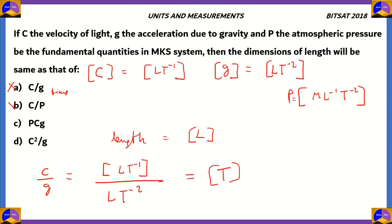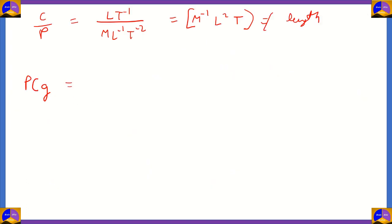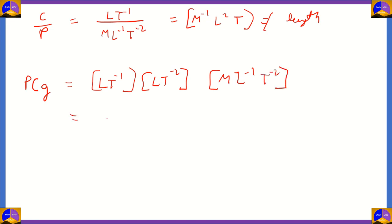Let's look at option C — p, c, and g — so that means multiplying all three quantities together. What you get is L·t⁻¹ times L·t⁻² times M·L⁻¹·t⁻². We get M, and then one L cancels with L⁻¹, and then combining the time exponents: minus 1, minus 2, minus 2 gives minus 5. So the result is not equal to length, and option C is incorrect.